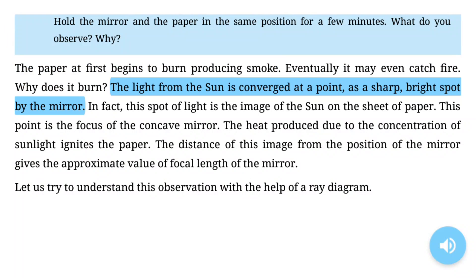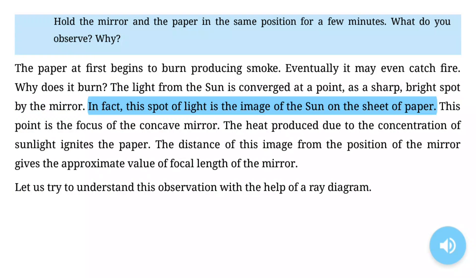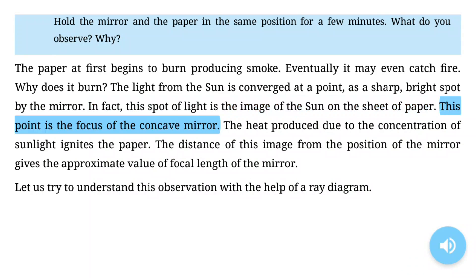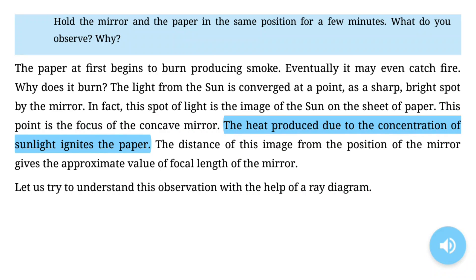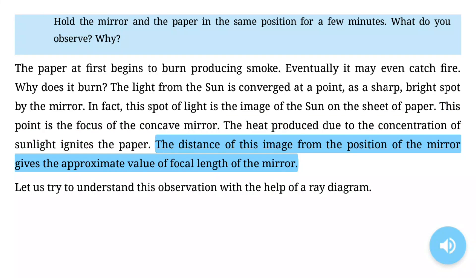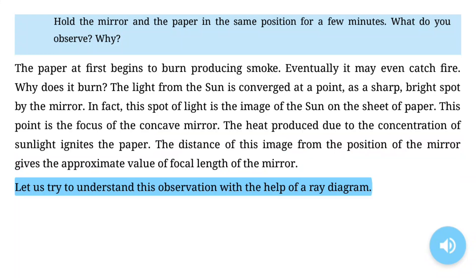Why does it burn? The light from the sun is converged at a point as a sharp, bright spot by the mirror. In fact, this spot of light is the image of the sun on the sheet of paper. This point is the focus of the concave mirror. The heat produced due to the concentration of sunlight ignites the paper. The distance of this image from the position of the mirror gives the approximate value of focal length of the mirror.